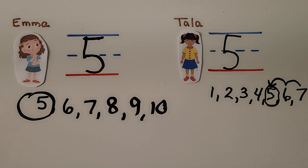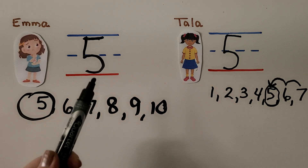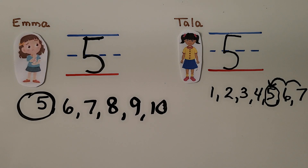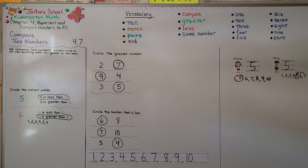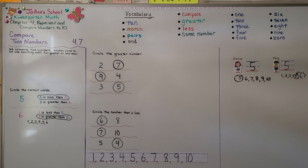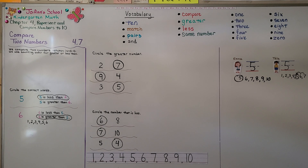We write how many cookies each girl has and compare the numbers. The numbers are the same — Emma has five cookies and Tala has five cookies. Both numbers are the same. So we can compare two numbers by using counting order. The number that comes first is less, and the number that comes after is greater. We can write the numbers in counting order to see, or think of them in our head.